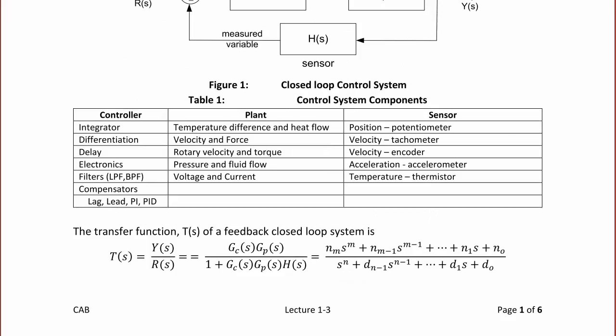Recall that the closed-loop transfer function T(s) = Y(s)/R(s) is Gc times Gp over 1 plus Gc Gp times H. You can also write it in terms of descending powers of s in the numerator and denominator with a coefficient of n sub m on the numerator terms, or a coefficient of d sub n on the denominator terms.